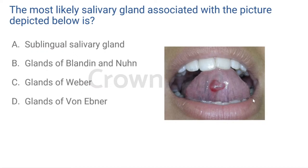The three sets of minor salivary glands noted on the tongue are: the glands of Weber, found along the lateral border of the tongue; the glands of von Ebner, surrounding the circumvallate papillae; and the glands of Blandin and Nuhn, also known as the anterior lingual glands, found in the anterior ventral tongue. There is ongoing research that mucoceles are common in the glands of Blandin and Nuhn because of their position and proneness to trauma.